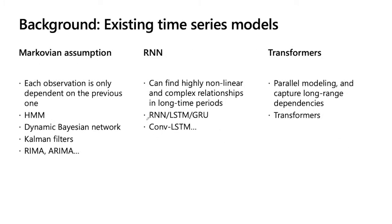We know that there are some existing time series models, such as Markov chains following the Markovian assumption, ARIMA models, and transformers. First, the Markovian assumption is that each observation is only dependent on the previous one. Following that assumption, HMM, dynamic Bayesian networks, Kalman filters, and other statistical models like ARIMA and ARIMA models are built for statistical analysis of time series.